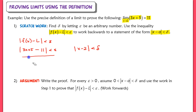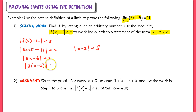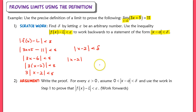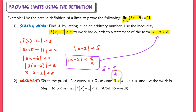Simplifying the inside gives us 3x minus 6. Factoring out a 3, we get the absolute value of 3 times (x minus 2). Pulling that 3 outside and dividing through by 3, we arrive at the absolute value of x minus 2 is less than epsilon over 3. So we've found our delta: delta equals epsilon over 3, expressed in terms of epsilon.